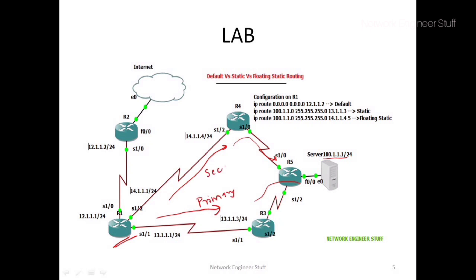We configured static routing on R1 to reach network 10.100.1.1/24 with next hop 13.1.1.3. In case this primary route goes down, we want the secondary route to be installed in the routing table. We cannot configure two equal static routes for load balancing here — we want only the primary route active, with the secondary taking over only on failure.